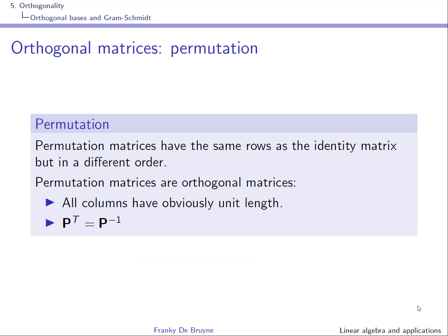Another matrix we have encountered before is the permutation matrix, which is also orthogonal. Permutation matrices have the same rows as the identity matrix but in a different order, so the columns have unit length. Permutation matrices, which are products of elementary permutation matrices, have the property that P transpose equals P inverse, so they are orthogonal matrices.